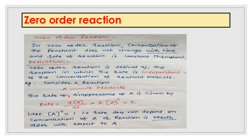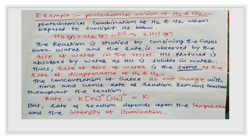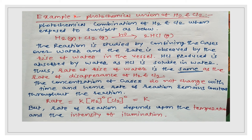The best example of a zero order reaction is the photochemical combination of H2 and Cl2. When H2 and Cl2 are exposed to sunlight, they react. The reaction is studied by confining the gases over water.